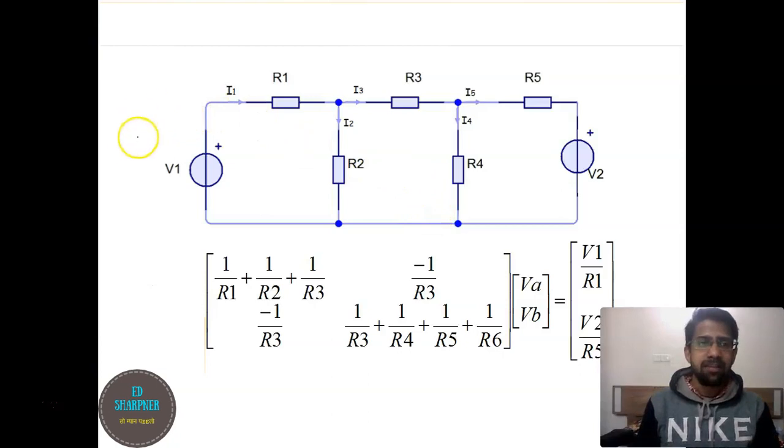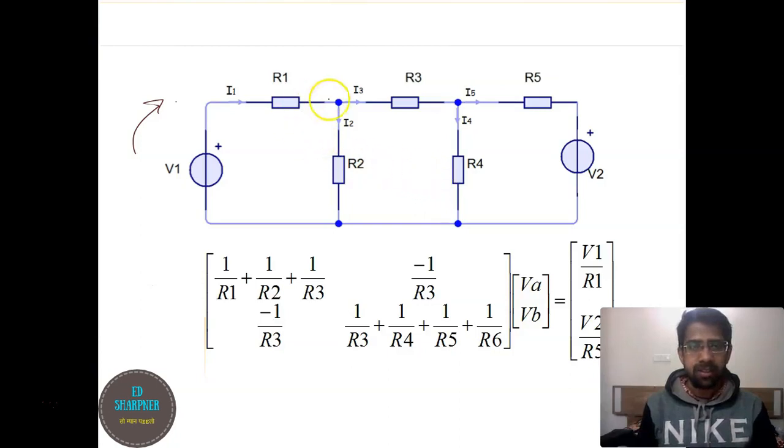So here we have a circuit. There are different resistors and two voltage sources. Now we are going to first identify the number of nodes. So there is this node, say A, there is this node, say B, and there are these two nodes.